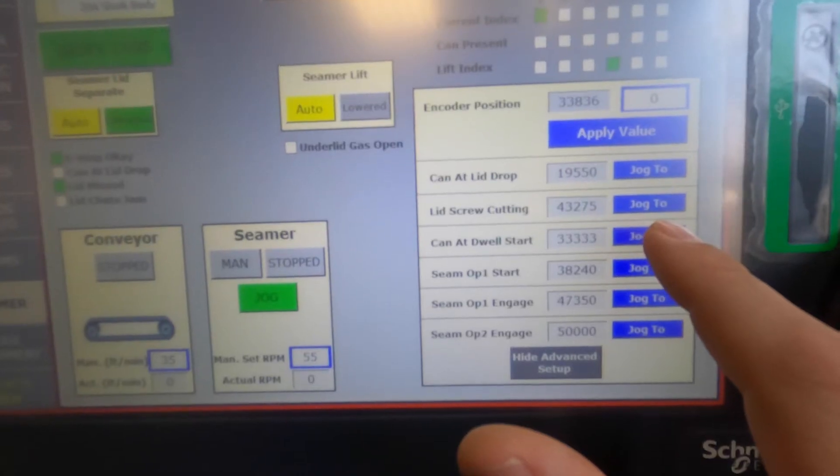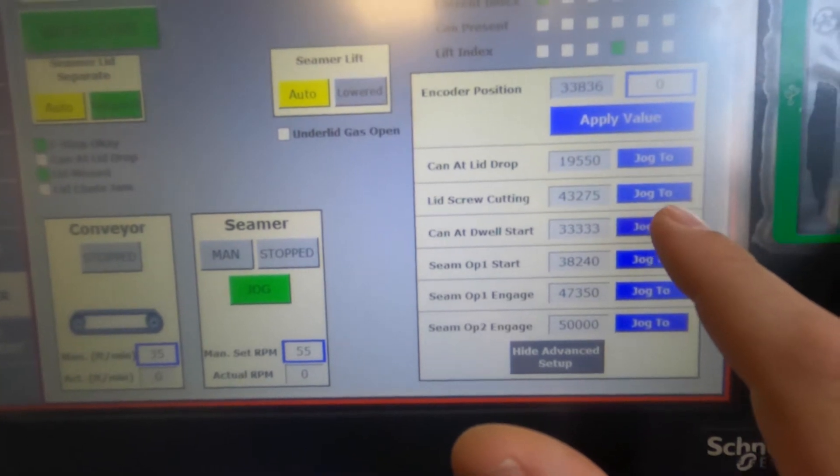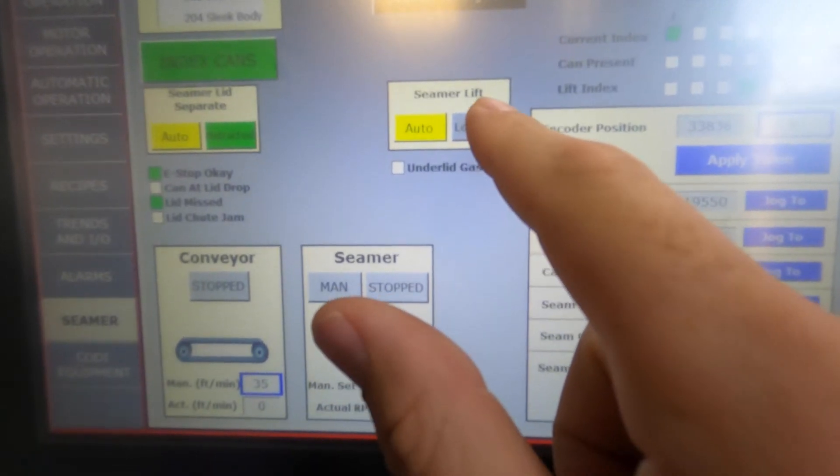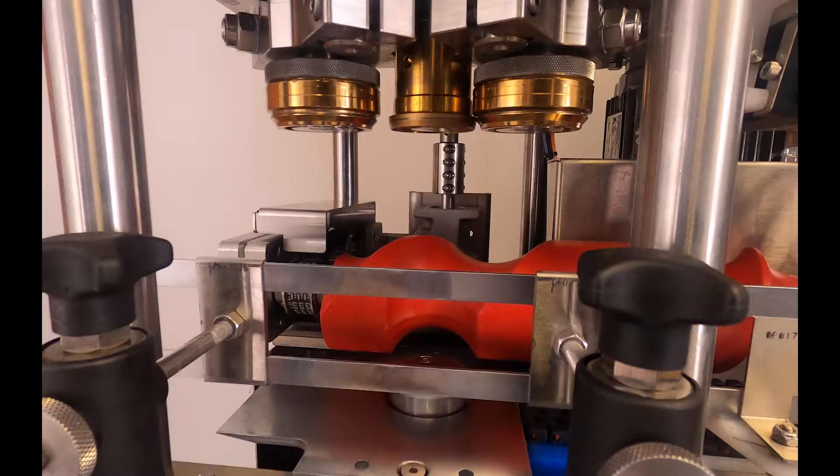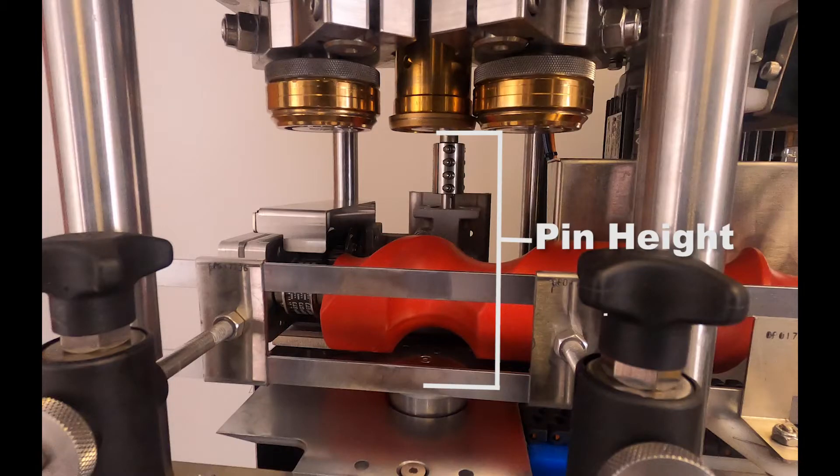With the screw jogged to home or can at dwell start and the lifter pad engaged, we can see what pin height looks like. Pin height is defined as the distance between the bottom of the chuck and the lifter in the raised position.